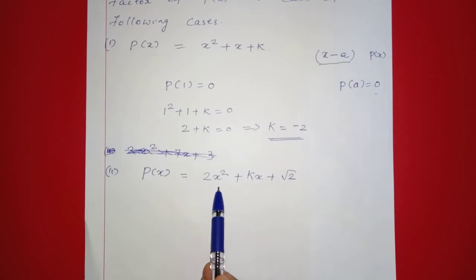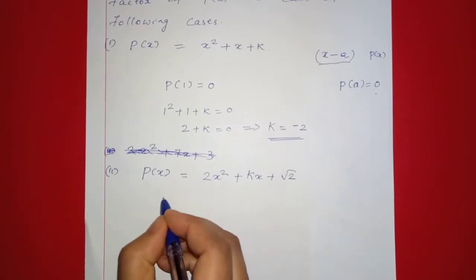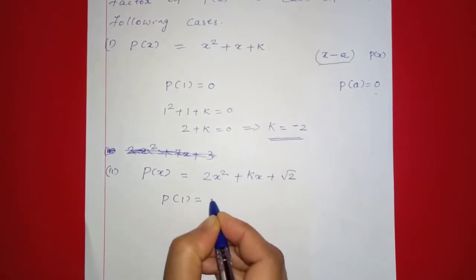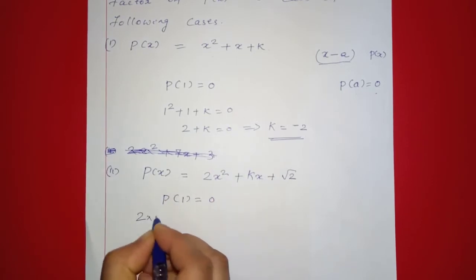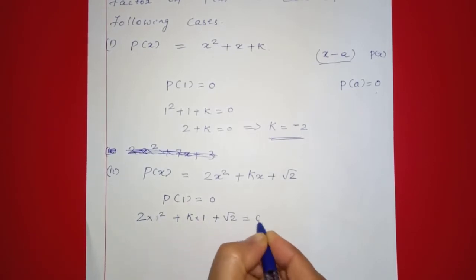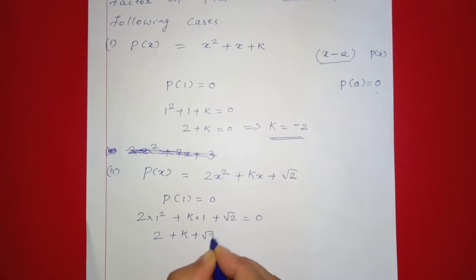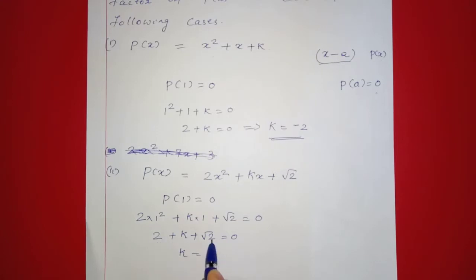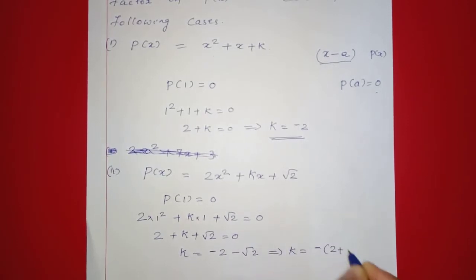Second one: p of x equal to 2x squared plus kx plus root 2. Since x minus 1 is a factor, p of 1 equal to 0, that is 2 into 1 squared plus k into 1 plus root 2 equal to 0, that is k equal to 2 plus root 2, which implies k equal to minus of 2 plus root 2.